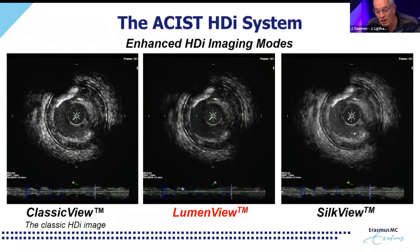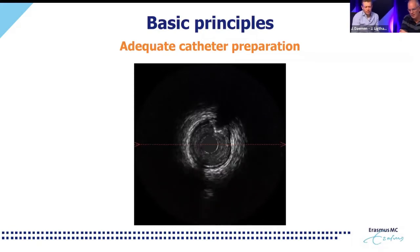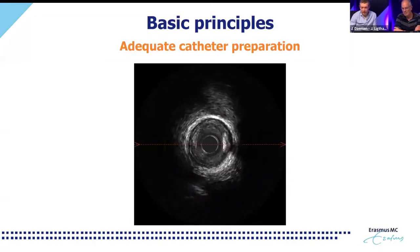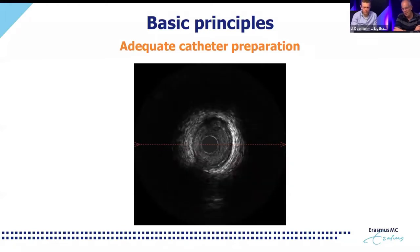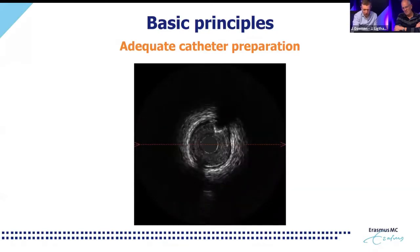Some basic principles when starting with IVUS — things that seem obvious but appear frequently as issues when we review cases. First: take the time to prepare the catheter well. This means adequately flushing the catheter according to the IFU — we typically do this in three steps over the rail. Make sure you do it properly, because otherwise you get images where, at the spot of interest, you lose the image due to air bubbles in the catheter lumen.